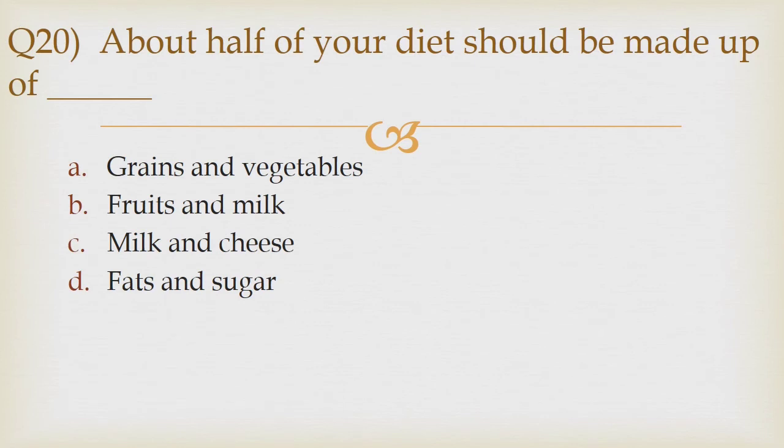Question 20: About half of your diet should be made up of option A grains and vegetables, option B fruits and milk, option C milk and cheese, option D fats and sugar. If you know the answer to this question, please write it down in the comment section. I will reveal the answer in the next video.